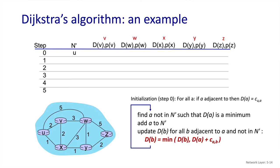That may have been difficult to visualize in pseudocode form, so here's an example. We have our sample network with u on the left side of the network graph. u needs to find the least cost path to every other router. We've created a column for every destination to track the path cost and the predecessor node, and we'll step through multiple iterations populating those columns. Step zero is our initialization step — u has direct links to v, w, and x, so we populate those costs. The predecessor node for each of these neighbors is u. y and z are not directly connected to u, so their cost at this iteration is infinity.